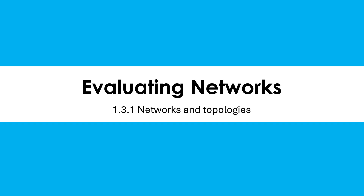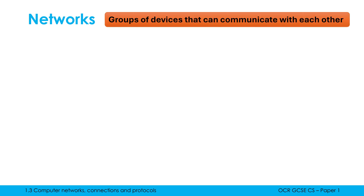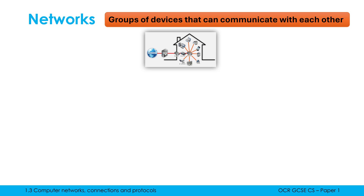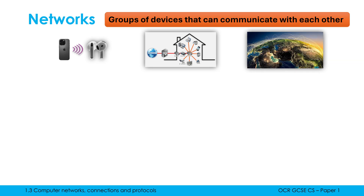We're going to start this networking topic by looking at the general pros and cons of networks and also some of their performance factors. So what is a network? A network is a group of devices that can communicate with each other. We typically think of a home network with wi-fi, or much smaller networks like between our phone and wireless headphones, and the internet itself is an example of a network.